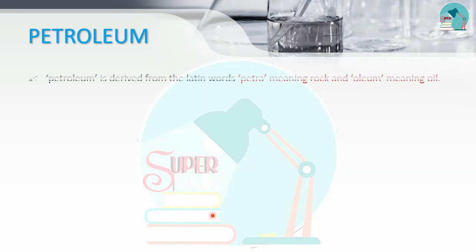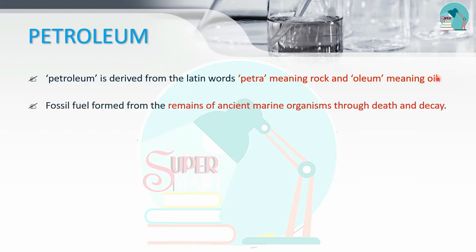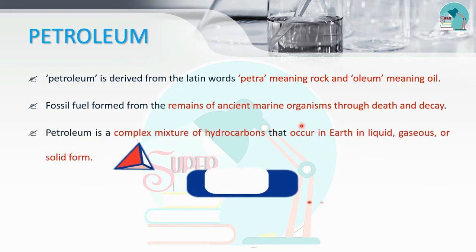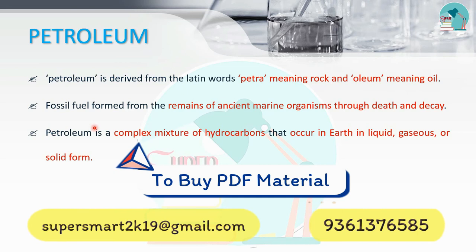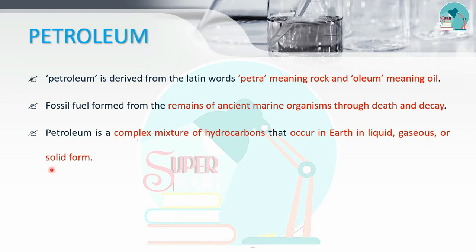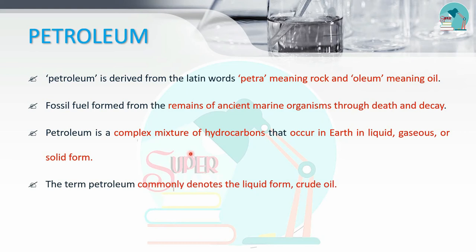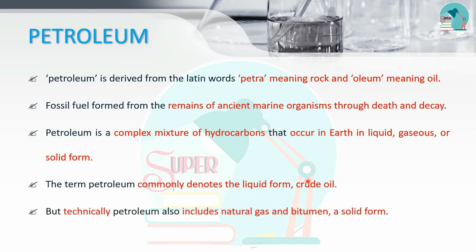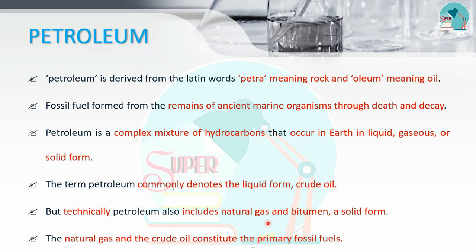Petroleum is called a Latin word meaning oil. That's why it's called petroleum. Petroleum is found in ancient marine organisms, so it is classified as a fossil fuel. It is a complex mixture of hydrocarbons existing in liquid, gaseous, and solid forms. Crude oil is the liquid form, natural gas is the gaseous form, and bitumen is the solid form. Natural gas is called the primary fossil fuel.